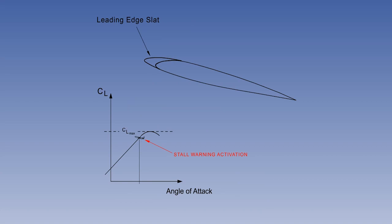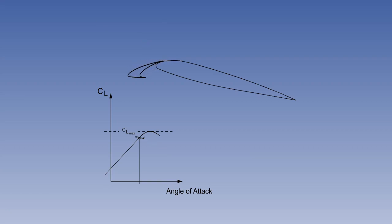Some jet transport aircraft have an automatic system that will fully extend the slats for stall protection. If the aircraft approaches the stall angle too closely, the automatic slat system will extend the slats to the fully open position.